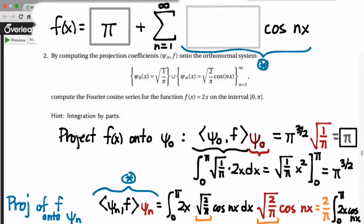And so, when it comes time to fill in this box, that box does get filled in with, because cosine of nx is the only thing in front of it, it gets filled in with square root of 2 over pi times the projection coefficient that we get.